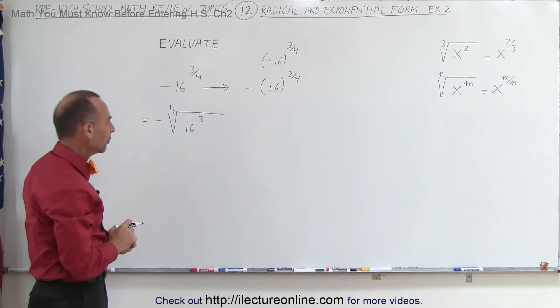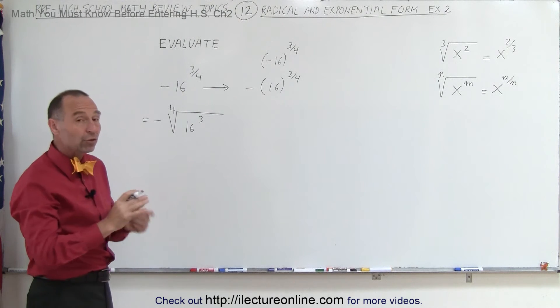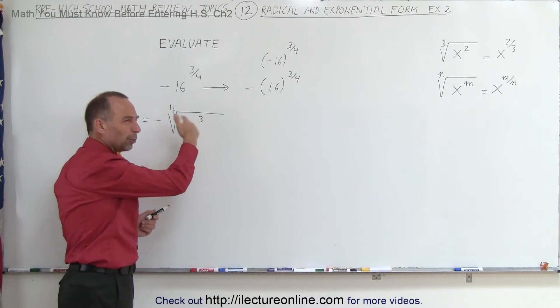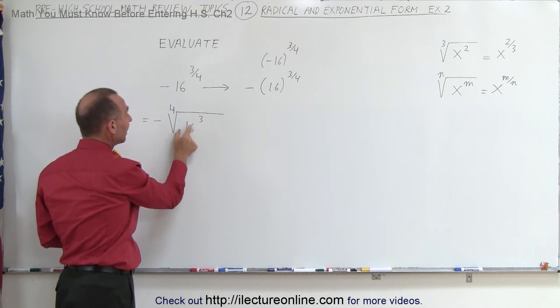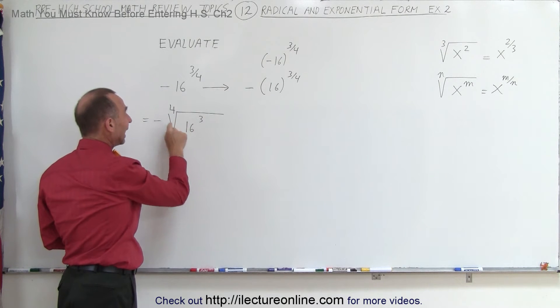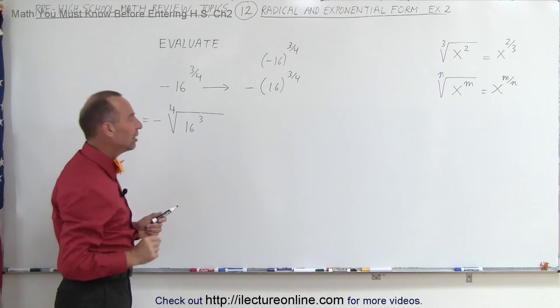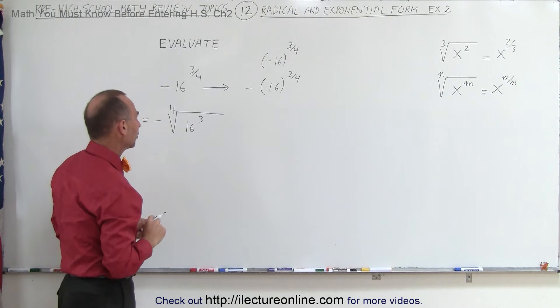Now it's easier to evaluate. It doesn't matter in which order we do it. We can first take 16 raised to the 3rd power, but then we end up with a really big number. Or we can take the number 16, take the fourth root of it, and then raise that result to the 3rd power. That's an easier way because we're working with smaller numbers.